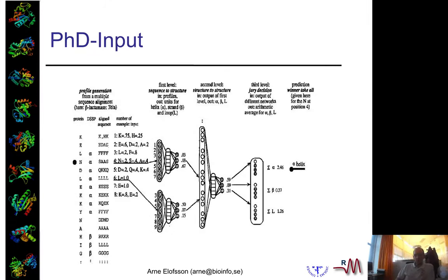This input is then used as input to a neural network. Normally you have what's called a sequence-to-structure network. So you have amino acid frequencies and some other information like the gaps and the conservation as input.